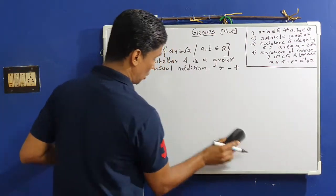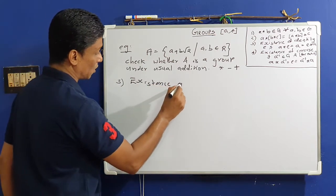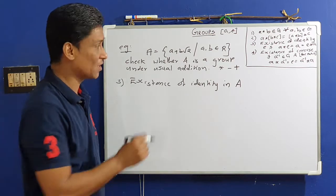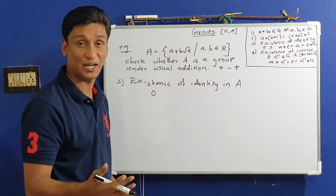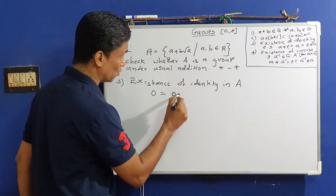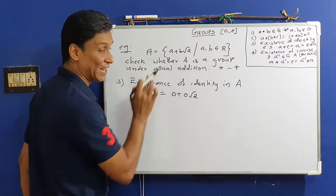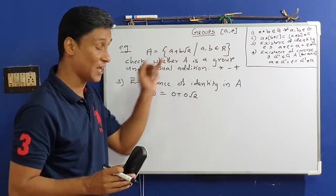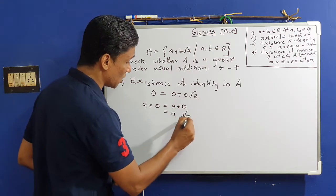Third condition: existence of identity element. In real numbers, the additive identity is 0. We can write 0 as 0 + 0·√2, which is of the form a + b√2 with a=0, b=0, so 0 ∈ A. Clearly A★0 = A+0 = A for all A ∈ A, so 0 is the identity element.